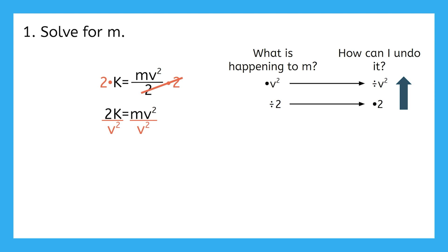On the right, the V squared over V squared will cancel, leaving just M. And on the left, I have 2K over V squared. Is there anything I can simplify here?